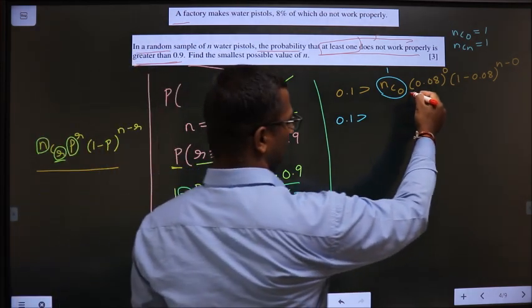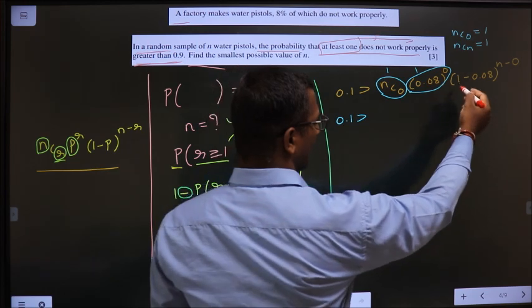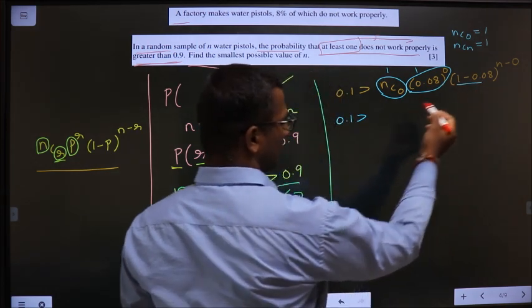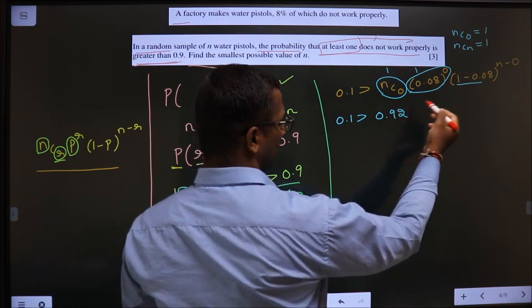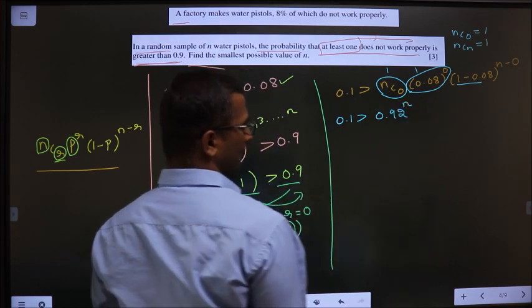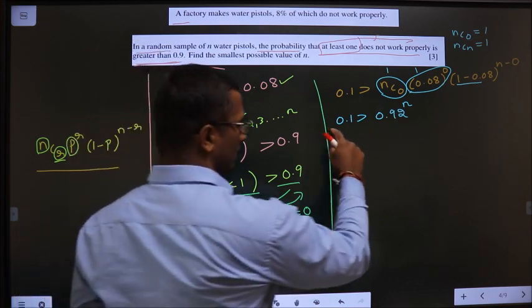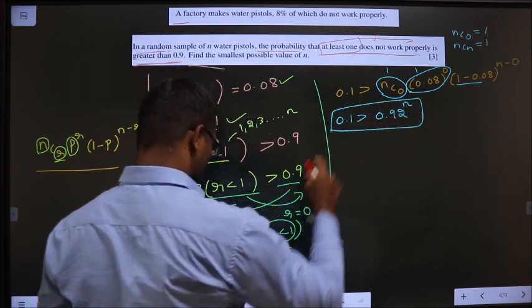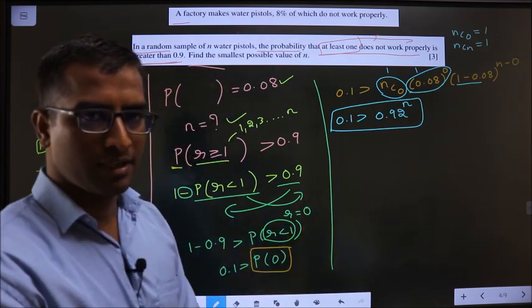Now. Here the power is 0, so this will also be 1. So we are left out with only this. 1 minus 0.08 is 0.92. Power n minus 0 is n. Clear? Now. From this inequality, I have to find the value for n. Clear? Till there.